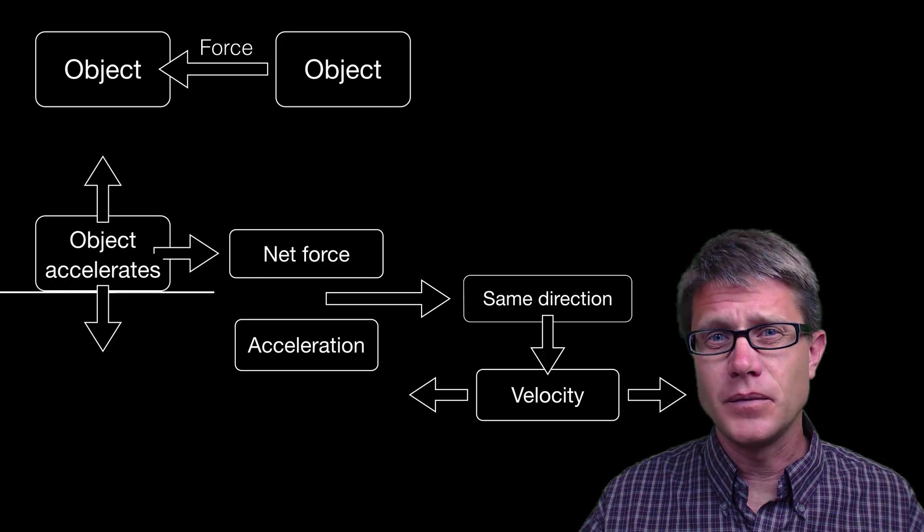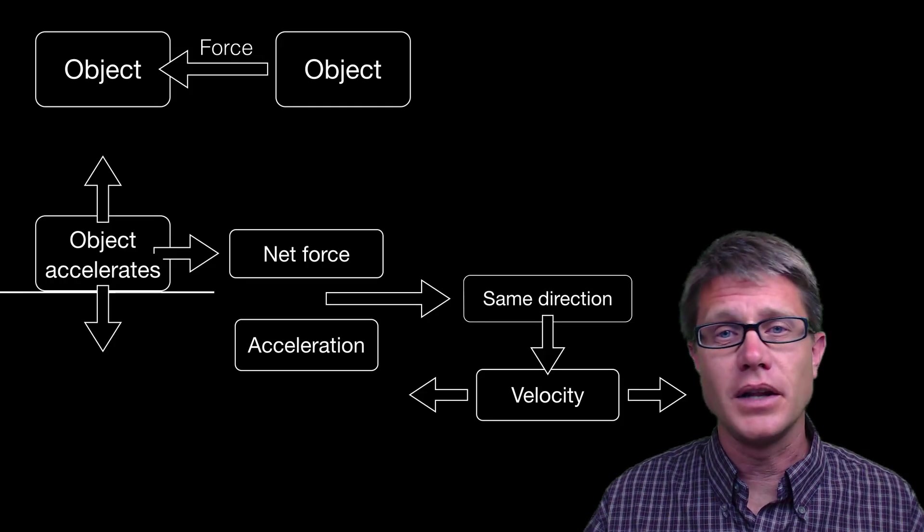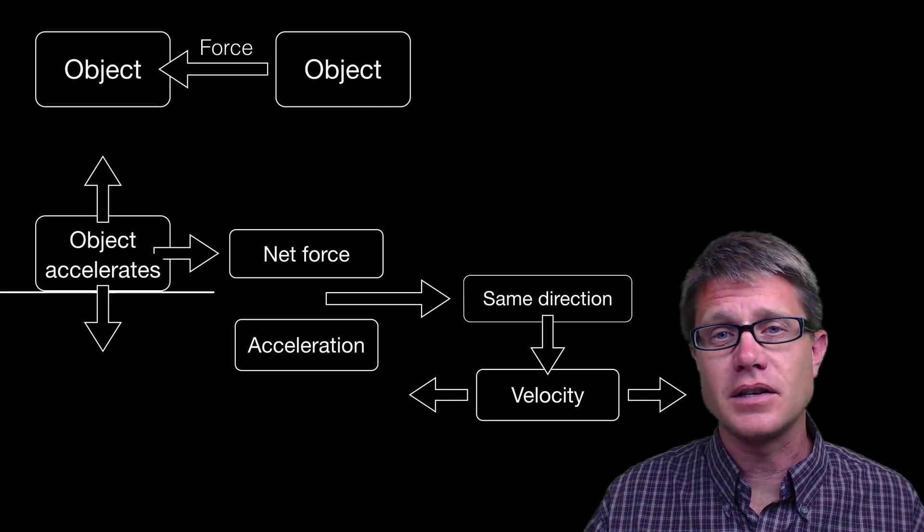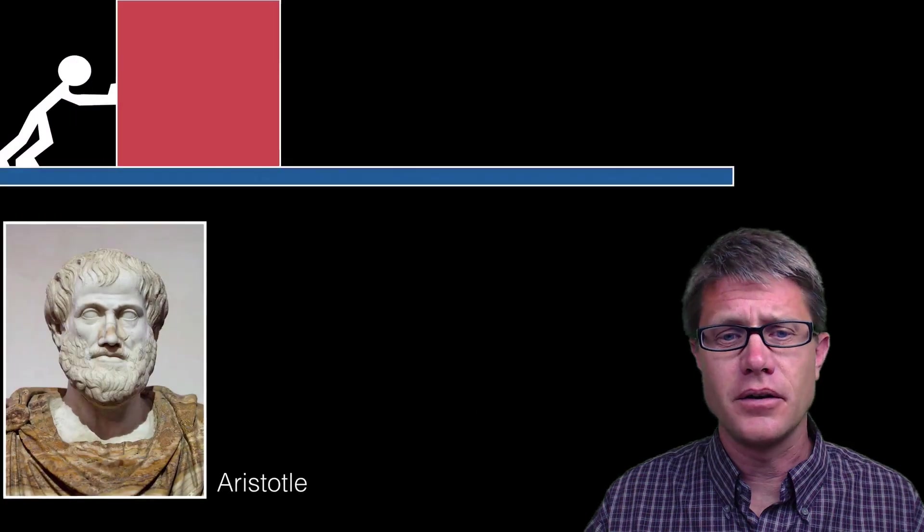Now the velocity is different. You could have an object that is moving with a velocity to the left and it is accelerating to the right. And we will look at that scenario in just a second.